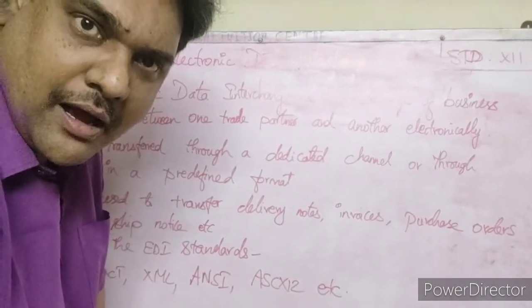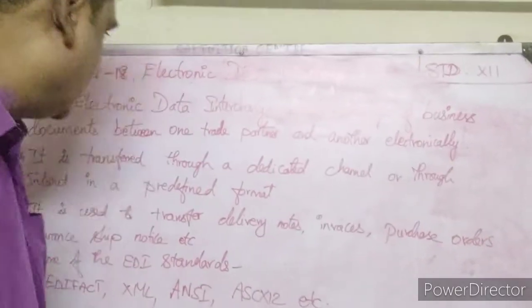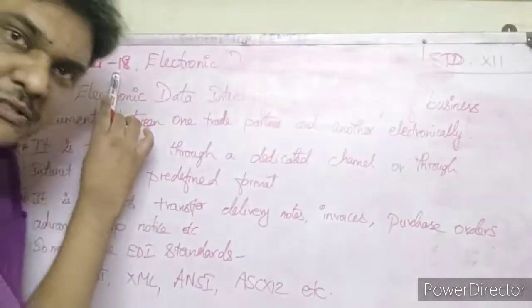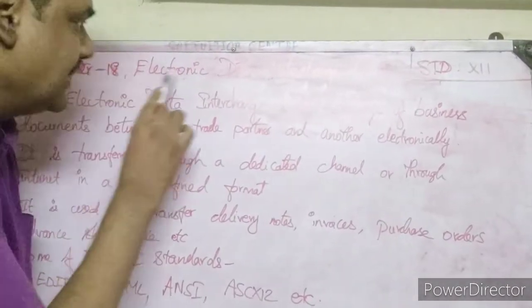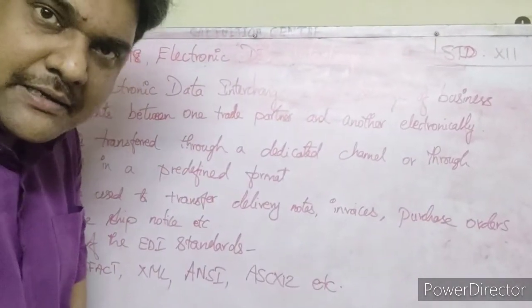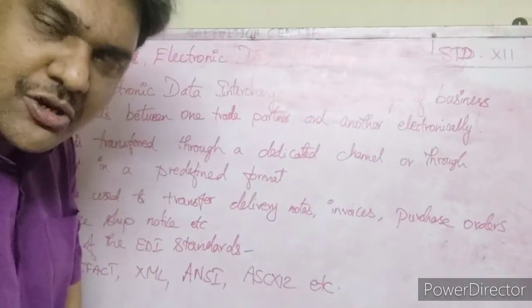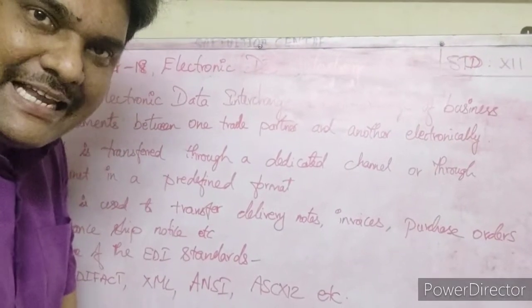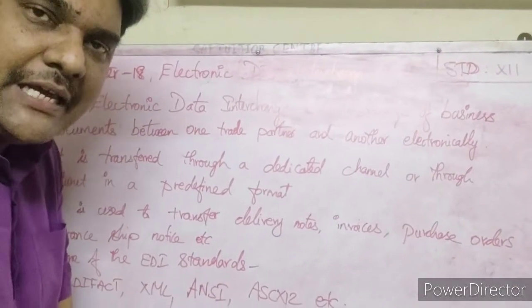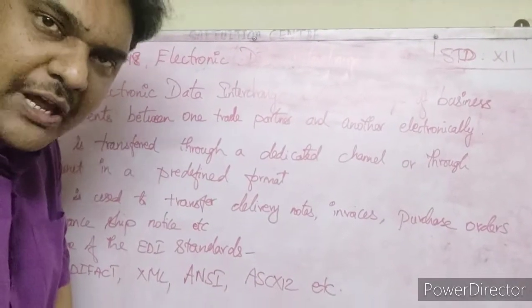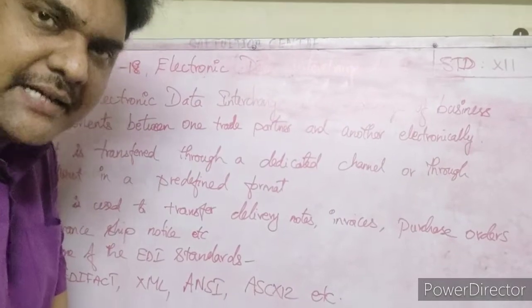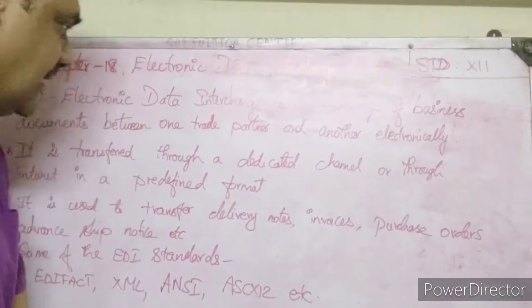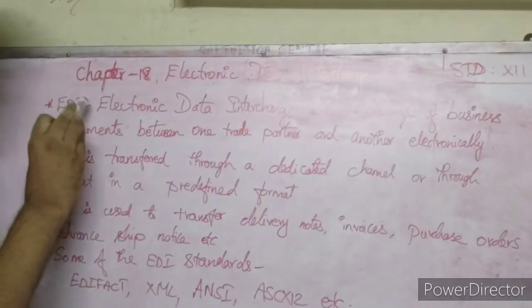Hello children. In today's session we are going to see about chapter 18, that is Electronic Data Interchange. In short we call it as EDI. EDI stands for Electronic Data Interchange. Let us see about that in detail.